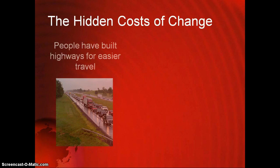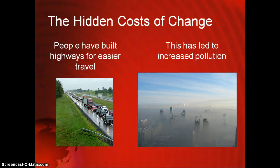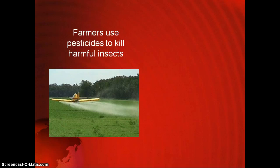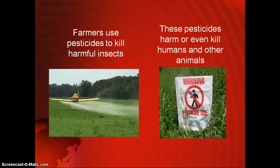For example, people have built highways for easier travel — going from here to the mall is much easier. However, a cost of this change is an increase in pollution. The smoke you see in that picture is called smog, a mixture of fog and smoke that is detrimental to people's health. Another example is the use of pesticides. Pesticides kill harmful insects that eat plants or carry diseases like mosquitoes, but they can also be harmful or even fatal to humans and other animals if ingested.